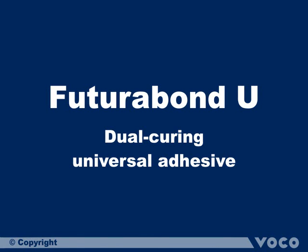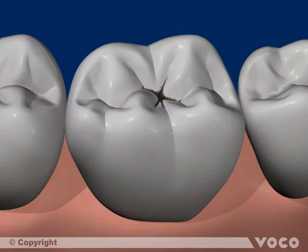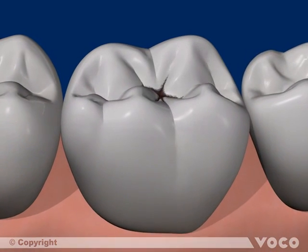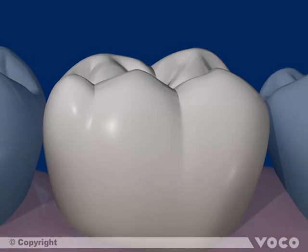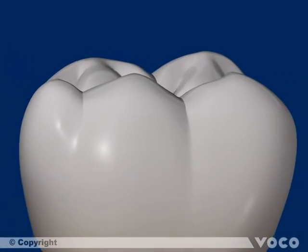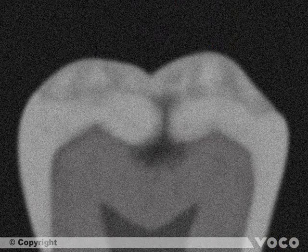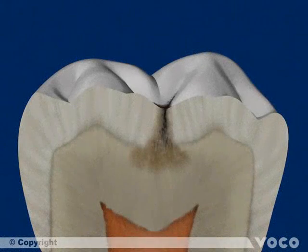This movie shows schematically the ongoing process when using a universal adhesive in self-edge mode featuring Futurabond U. Here is an example of a carious lesion seen clinically in the enamel and radiographically, with a typical spreading of the caries into the dentine.